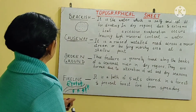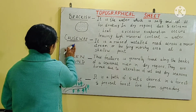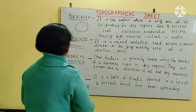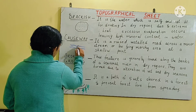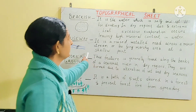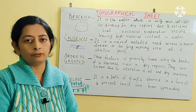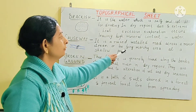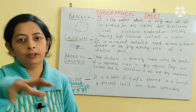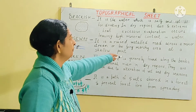A causeway is found near a small stream — a small distributary of a river — where a small bridge-like structure is built. A causeway is a metal road across a minor stream or a low-lying marshy area. It is found at a shallow point, comparatively lower than the neighboring areas, and provides a raised metal road crossing.